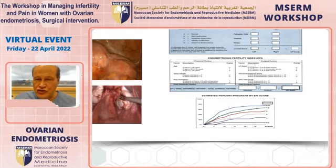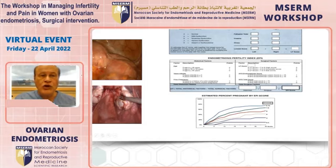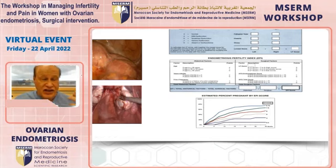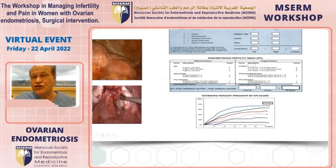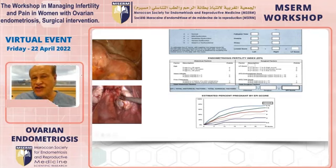The Endometriosis Fertility Index attempts to establish the probability of pregnancy after surgery. For example, if at the end of surgery there are extensive adhesions and the ovary and tube are barely visible, the patient will likely not conceive spontaneously due to adhesions and should proceed to IVF. If the tubes and ovaries are normal after surgery with only an obliterated cul-de-sac, the patient has a high probability of spontaneous pregnancy.